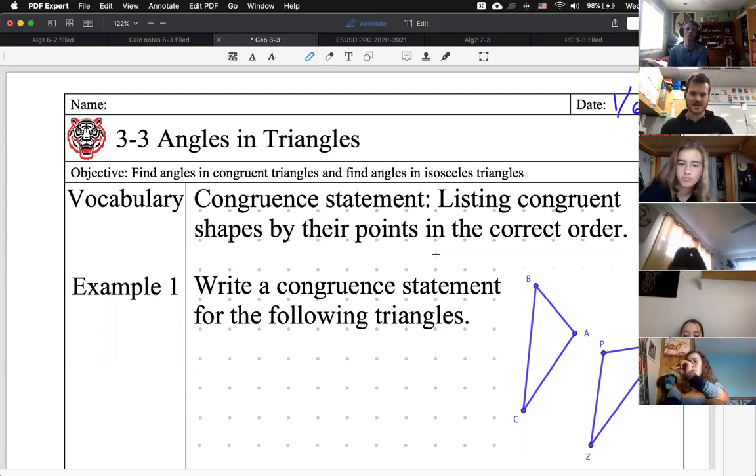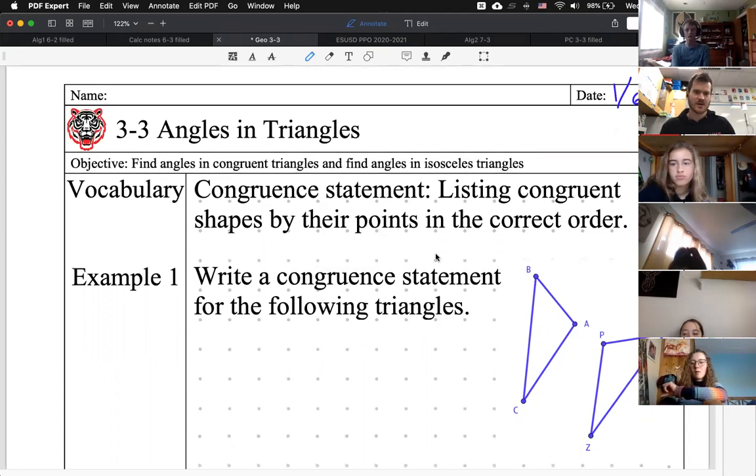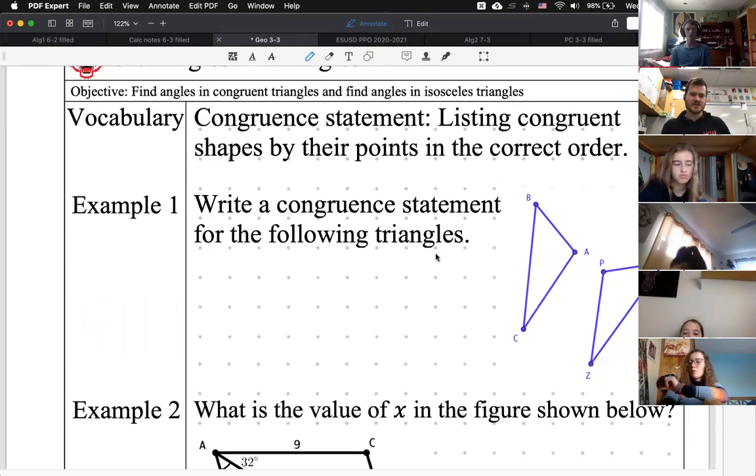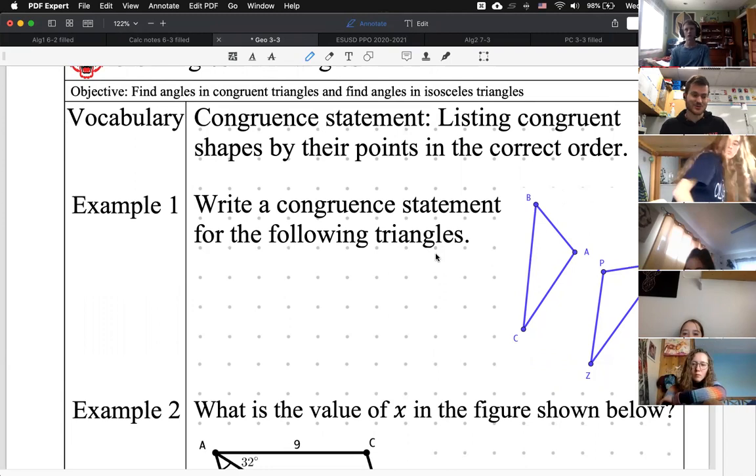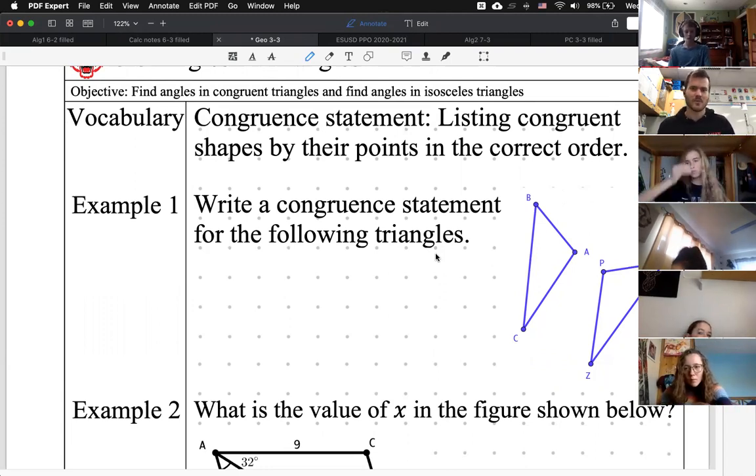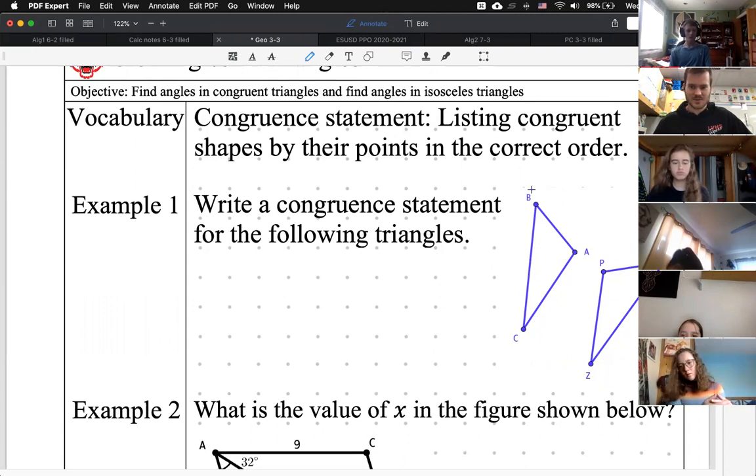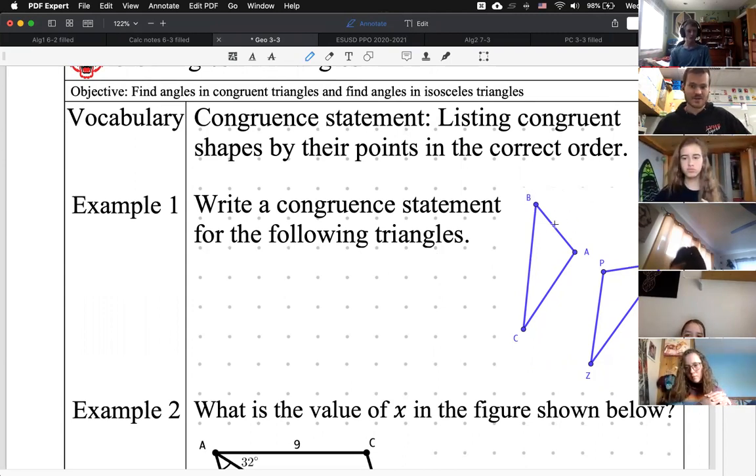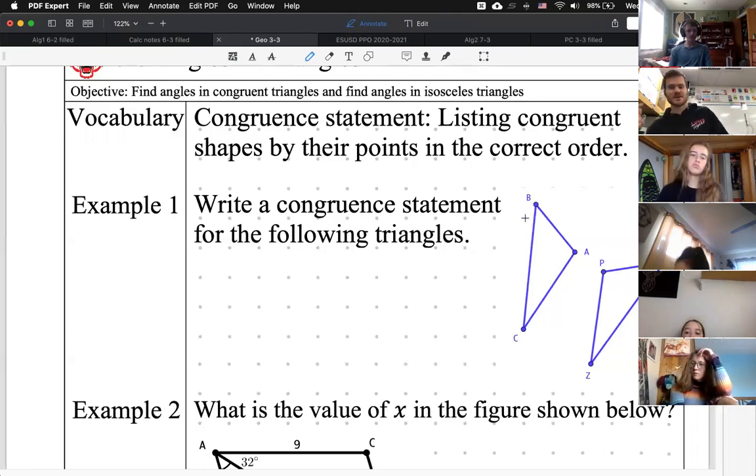Yeah, so vocab. Congruency statements. These are, I want to review these because sometimes Khan Academy or me, I'll throw these in here just as a trick question. So make sure that you're listing points in the correct order. With triangles, it's especially tricky. With longer shapes, it's pretty clear that things are in wrong orders. But it's just making sure that you list letters in the correct order and making sure that the first point that you list is congruent to the first point that you list for the second shape.